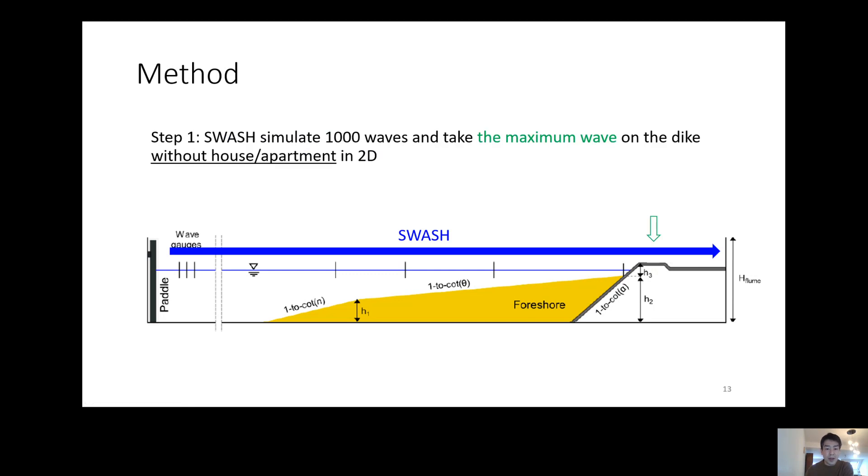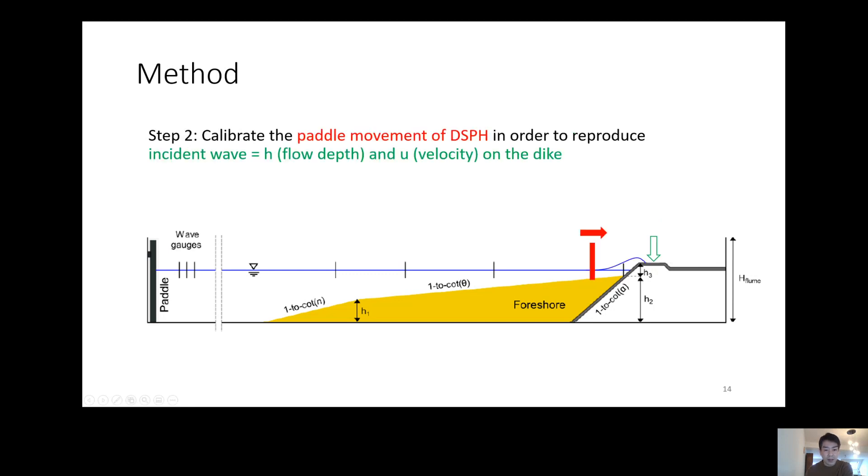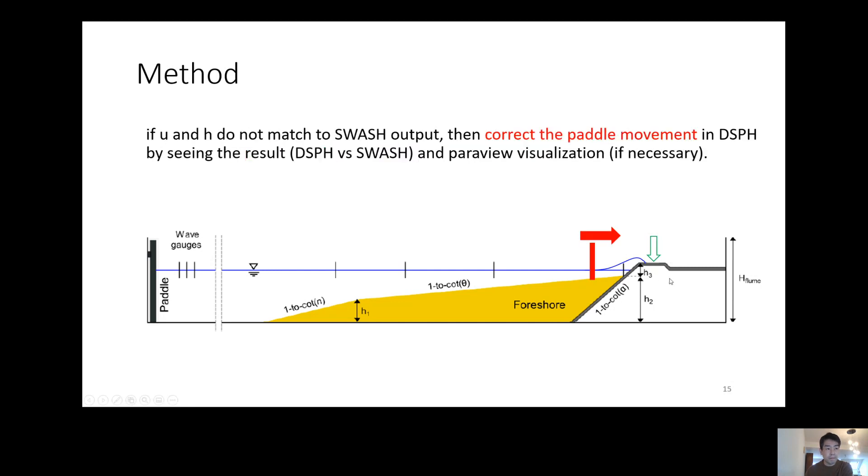Now I will explain the calibration methodology step by step. First, SWASH needs to be simulated with 1,000 waves without apartment building in 2D. Then we take the maximum wave on the dike. Second, we need to calibrate the paddle movement of DualSPHysics in order to reproduce the incident wave flow depth and velocity on the dike. If flow depth and velocity do not match to SWASH output, then correct the paddle movement in DualSPHysics based on the result and the ParaView visualization if necessary.